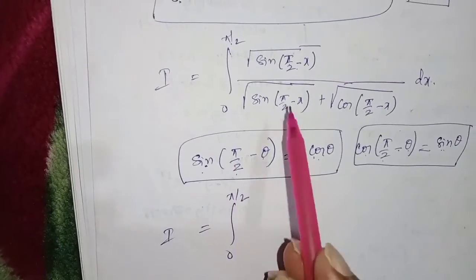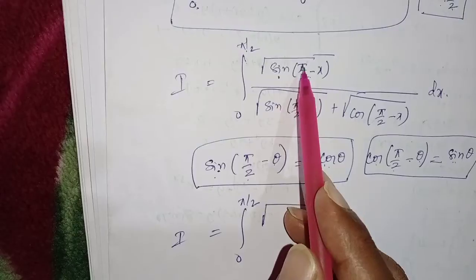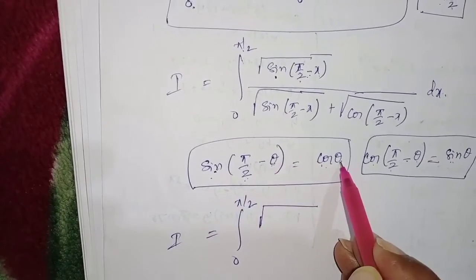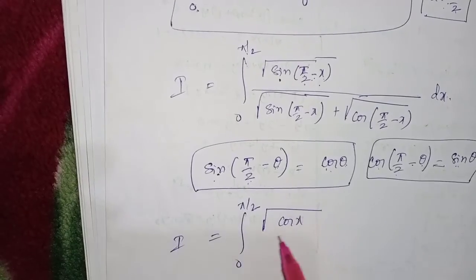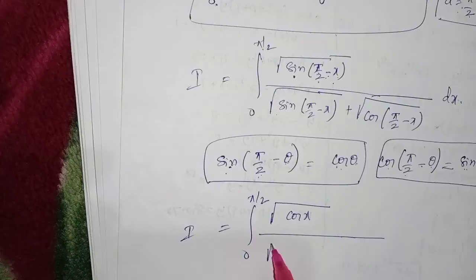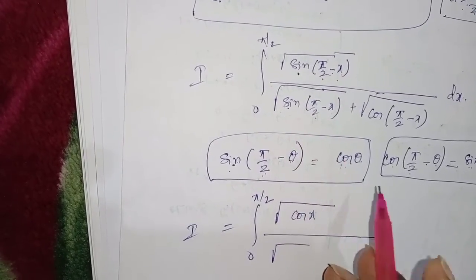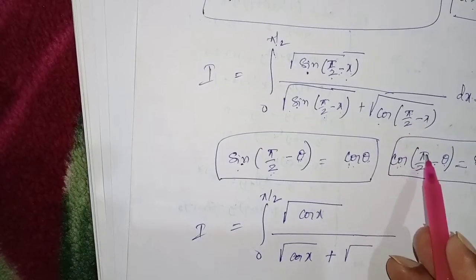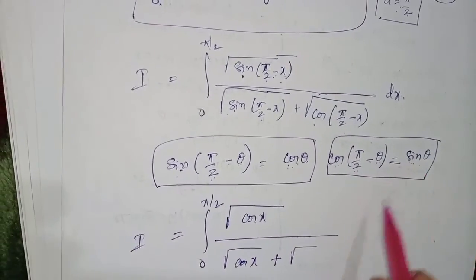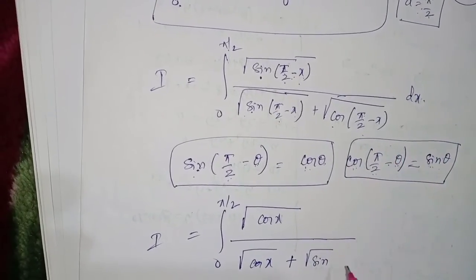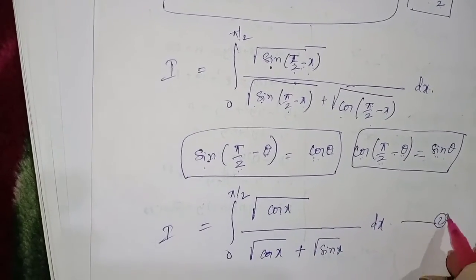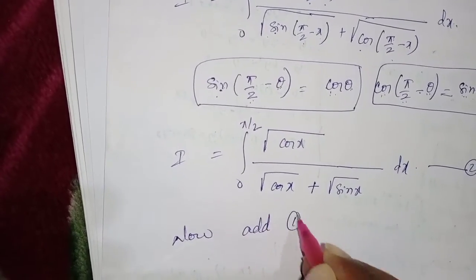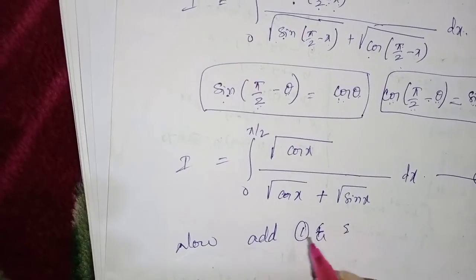Applying the identities, I = ∫₀^(π/2) √cosx / (√cosx + √sinx) dx. Since sin(π/2 − x) = cosx and cos(π/2 − x) = sinx, the integral becomes √cosx over (√cosx + √sinx) dx. This is equation number 2.